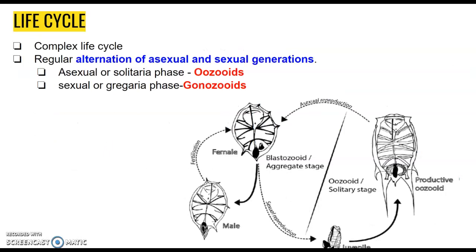When we speak about the life cycle, they have a very complex life cycle with a very regular alternation of sexual and asexual generations. The asexual and solitary phase is represented by the oozooids, whereas the sexual and gregarious form is represented by the gonozooids. This shows a small representation of the life cycle: asexual reproduction converts into blastozoids.